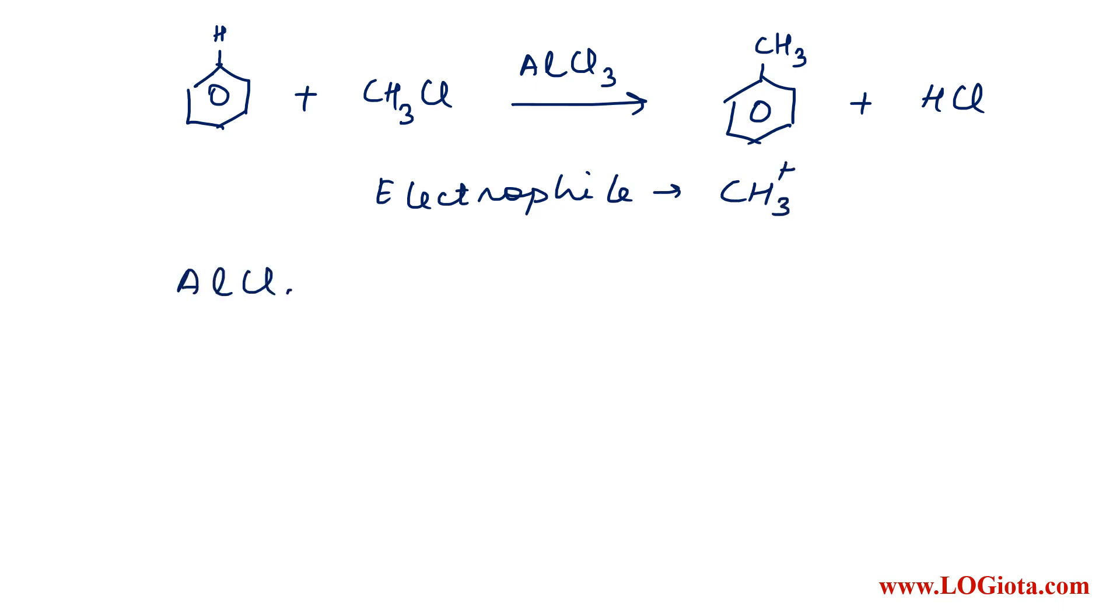What happens is when AlCl3 reacts with CH3Cl, it forms AlCl4⁻ plus CH3⁺. Benzene is a very stable compound, so it doesn't undergo reaction easily. When this CH3⁺ is generated, the reaction becomes very easy.